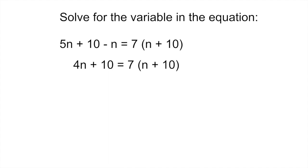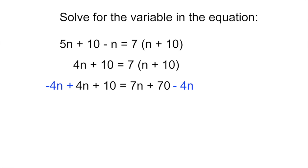Multiplying 7 times n gives 7n, and 7 times 10 gives 70. Now get the n terms together by subtracting 4n from both sides — whatever you do to one side you must do to the other. On the left side, 4n minus 4n cancels to zero. On the right side you're left with 7n minus 4n plus 70, which simplifies to 3n plus 70.